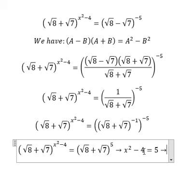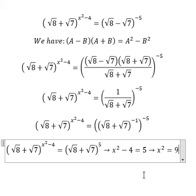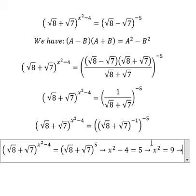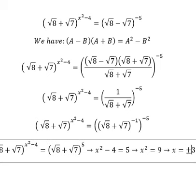We move negative four to the right side and get nine. Now we take the square root of both sides, so we have positive three and negative three.